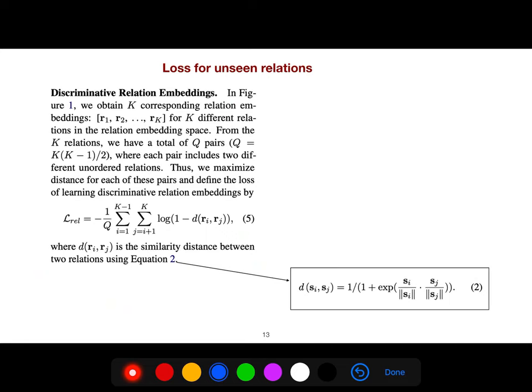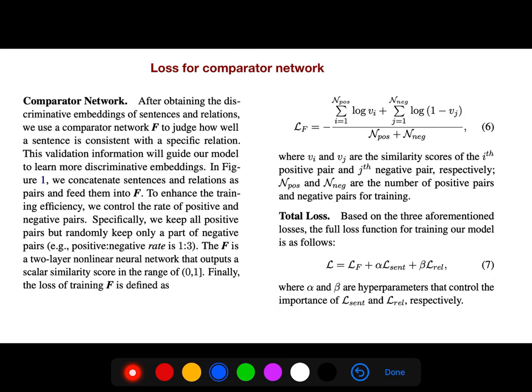And for unseen relations, we use that, this is the distance between, the similarity distance between the two relations with this equation. And so we have K different relations in the relation embedding space. And from K relations, we have K times K minus 1, but half of that for where each pair includes two different unordered relations.